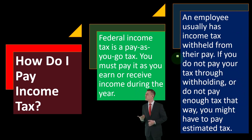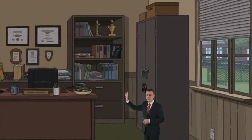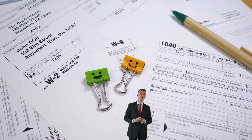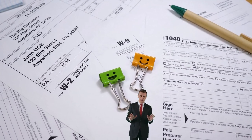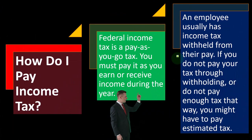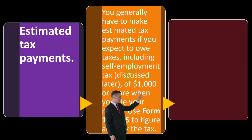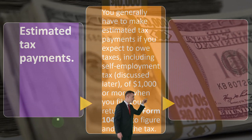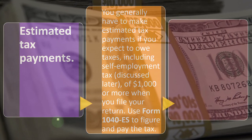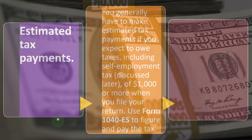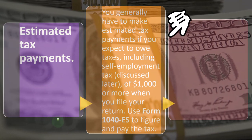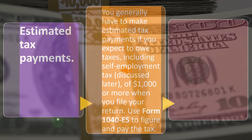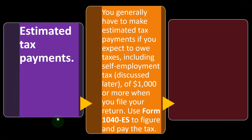If you do not pay your tax through withholdings, or do not pay enough tax that way, you might have to pay estimated taxes. If you have a Schedule C business, you might have to pay using estimates because you don't have any W-2 withholdings. Generally, you have to make estimated tax payments if you expect to owe taxes — including self-employment tax — of $1,000 or more when you file your return. Use Form 1040-ES to figure and pay the tax.